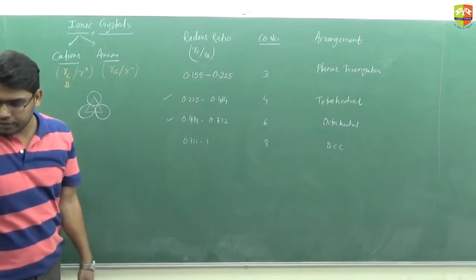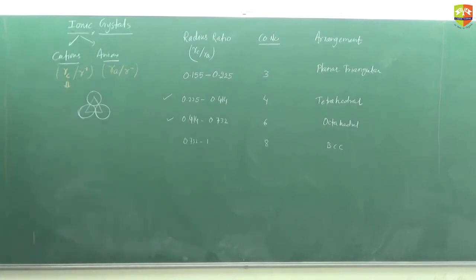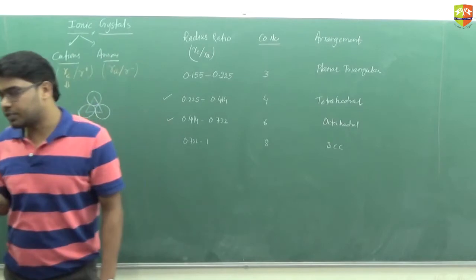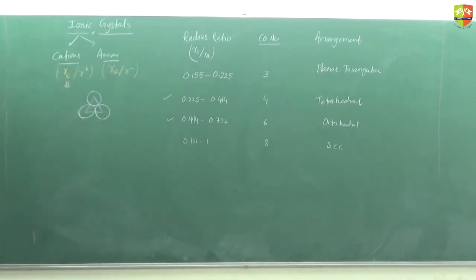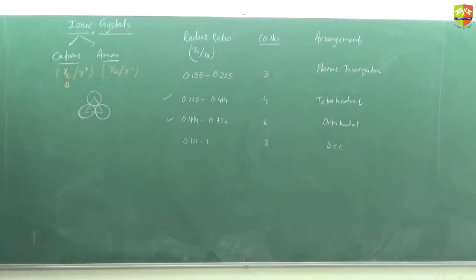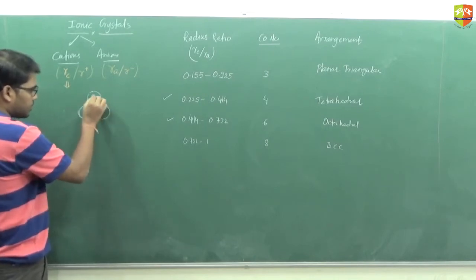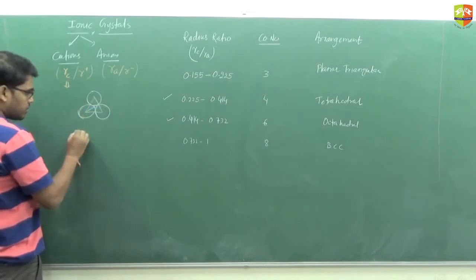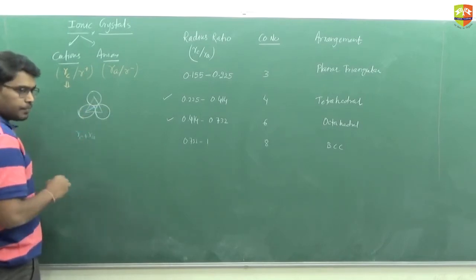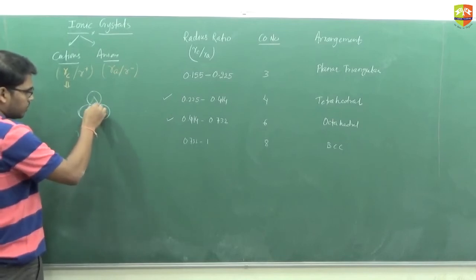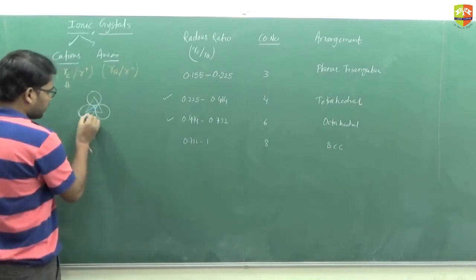Most important is the radius ratio range for each arrangement. Now let me show the geometric derivation for the triangular void. In the triangular arrangement, this distance between anion and cation is RC + RA. Looking at the triangle formed: cos 30° = RC / (RC + RA).